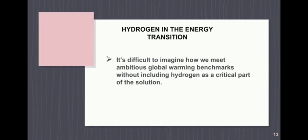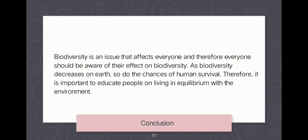In conclusion, biodiversity is an issue that affects everyone, and everyone should be aware of their effect on biodiversity. As biodiversity decreases on Earth, so do the chances of human survival. It is important to educate people on living in equilibrium with the environment and to ensure that governments make laws that protect biodiversity rather than focus on short-sighted economics. If humans become extinct, it will likely be a result of their own actions or lack of action. That's the end of our discussion — we hope you learned something. Good luck on the final exam, and thank you.